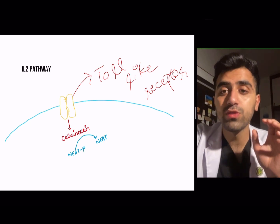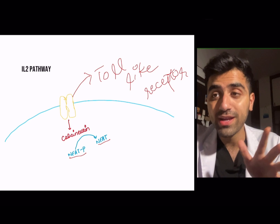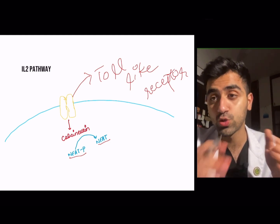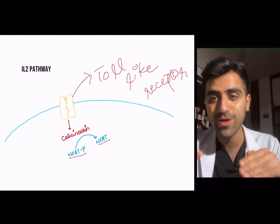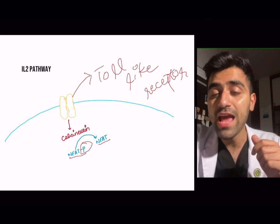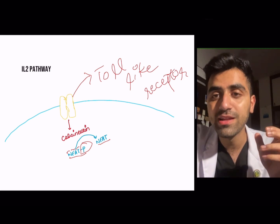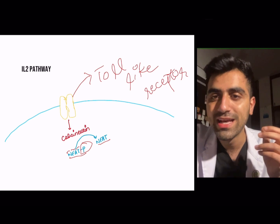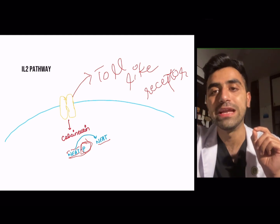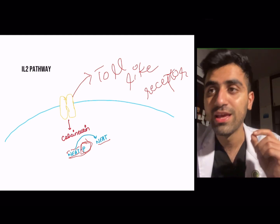Calcineurin converts NFAT-P into NFAT. NFAT-P means phosphorylated nuclear factor of activated T cells. The 'P' means it's phosphorylated. So calcineurin is performing dephosphorylation — removing the phosphorus group from NFAT-P to produce NFAT.